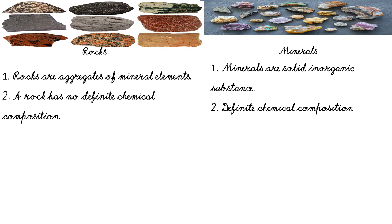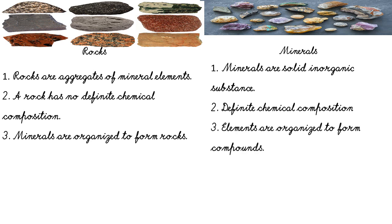Whereas minerals have a definite chemical composition. Minerals are organized to form rocks — that means minerals are arranged systematically to form rocks. Whereas elements are organized to form compounds — meaning elements are systematically arranged to form compounds, which are known as minerals.